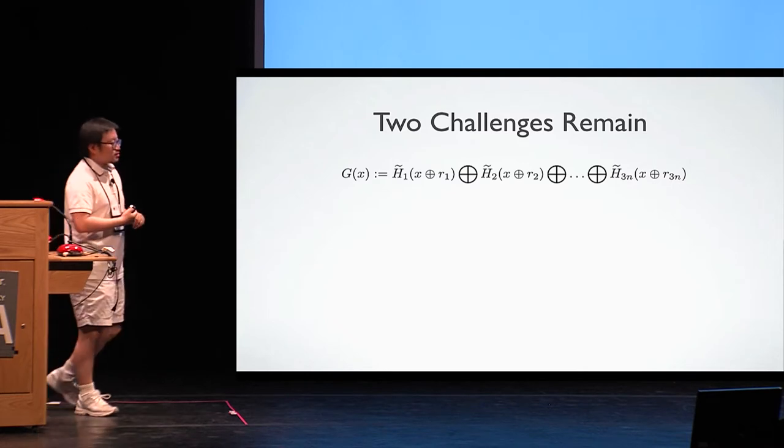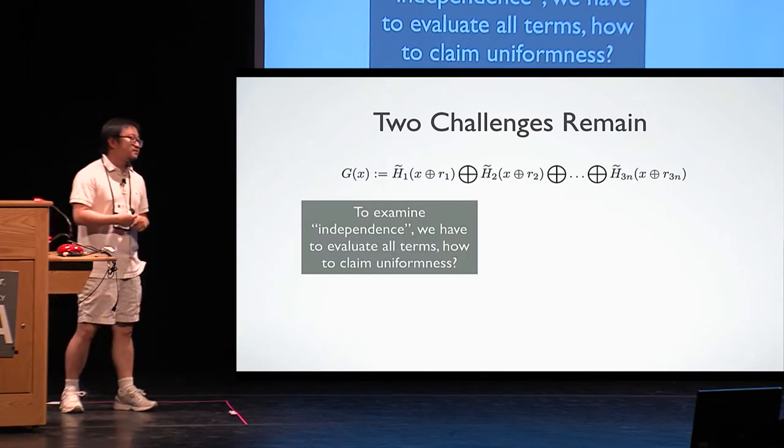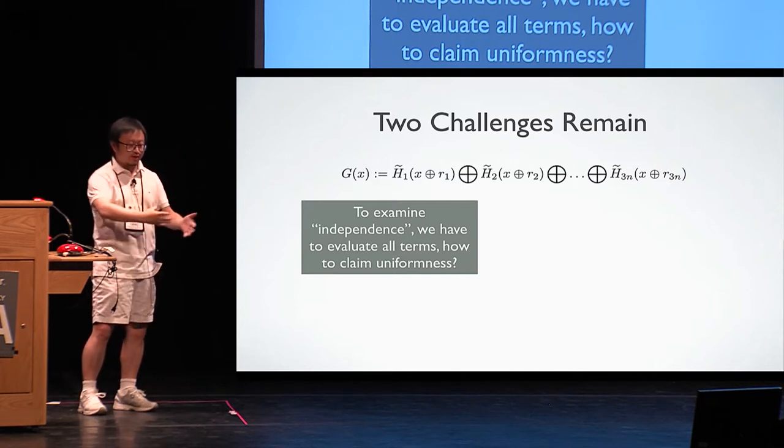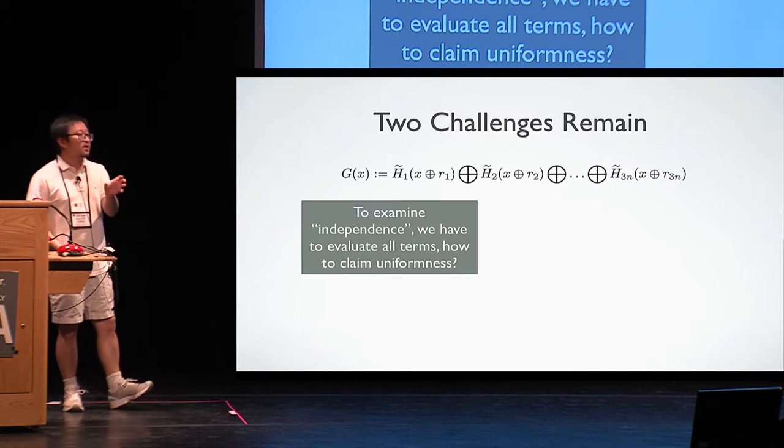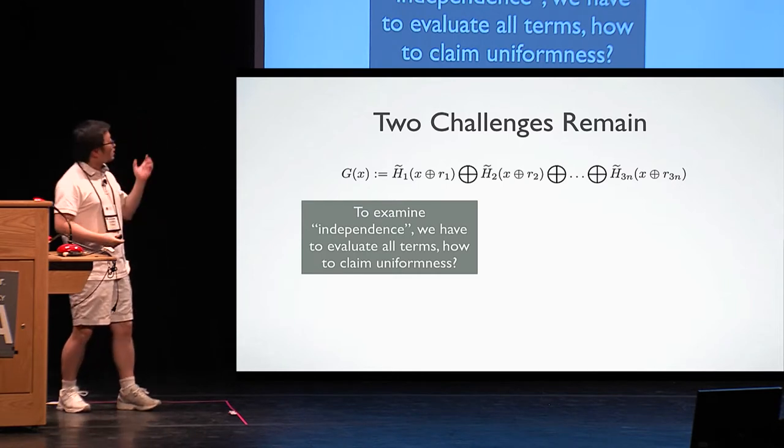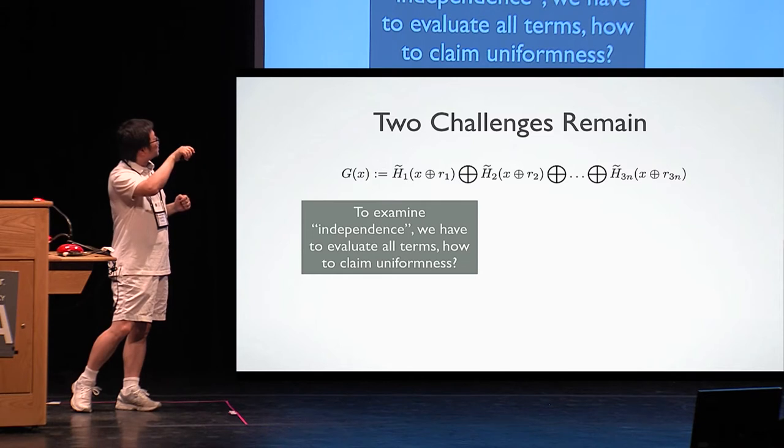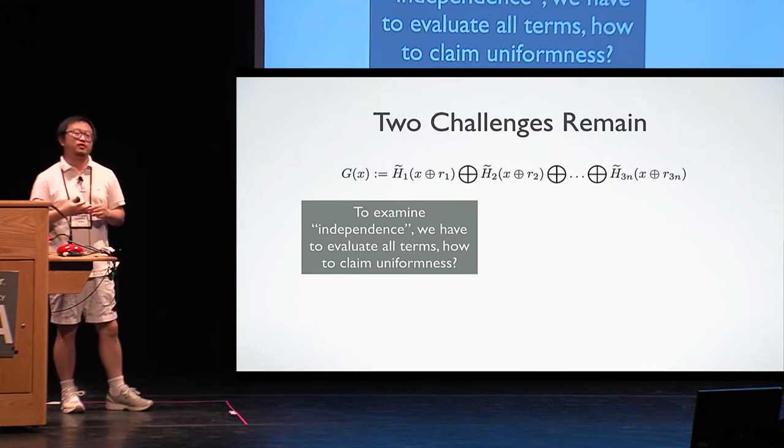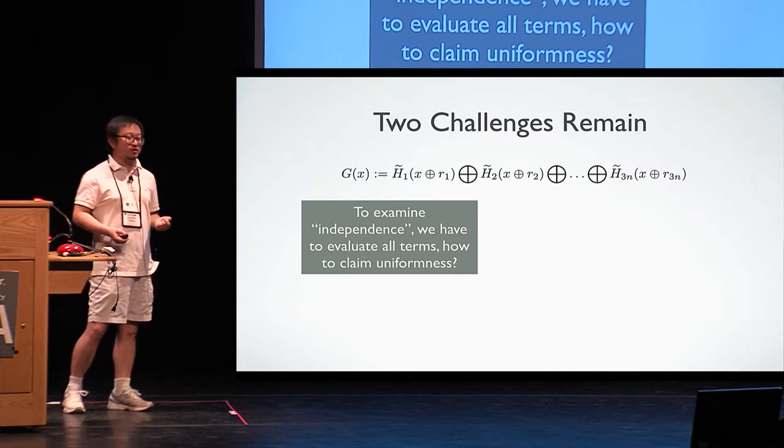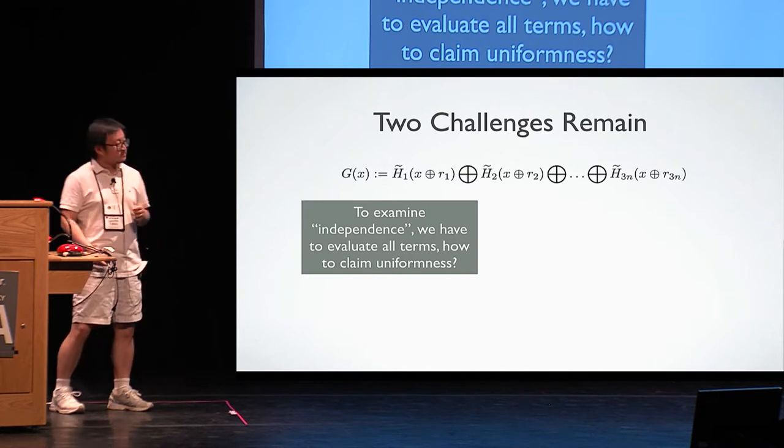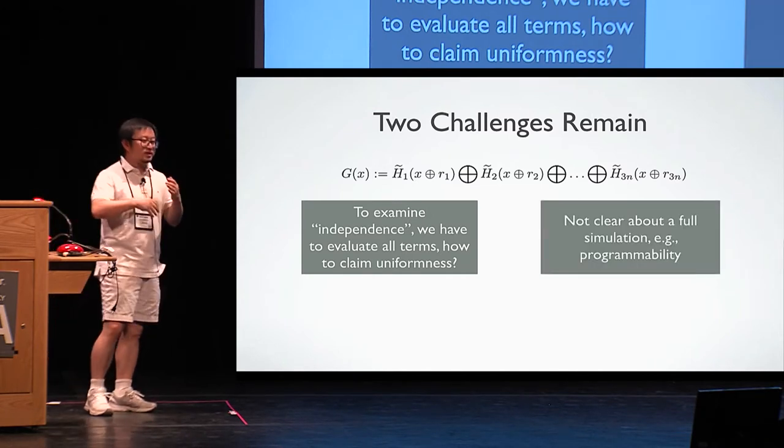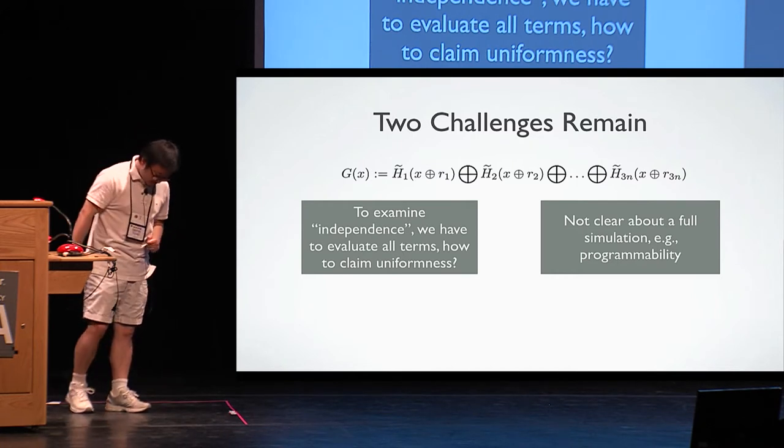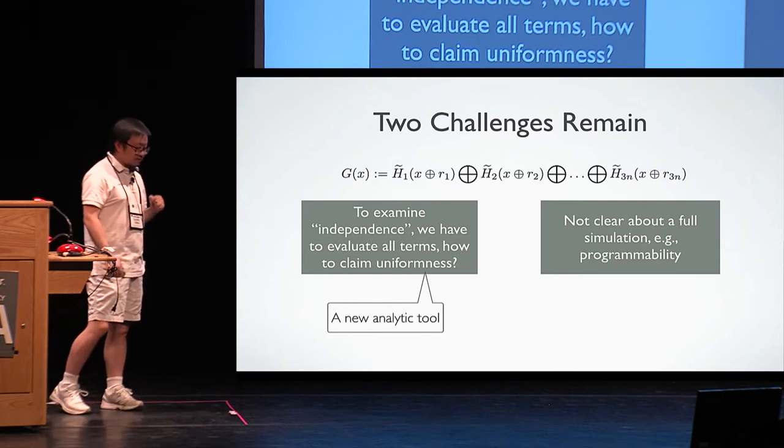But there are two challenges remain. In order to really show such independence intuitively, we really need to examine all the values at all points. After we expose all the possible random values, because we identify some term, ah, if we replace this term, it doesn't really influence other terms at all. And also, when evaluating at all the other terms, this single input is never queried. That seems easy. But the immediate question we will face is that, since we already evaluated this term, how can we still claim this is uniformly generated? And also, another challenge is that we still need to finish the simulator and inherit all nice properties, for example, programmability. It's not clear how we can get this property.